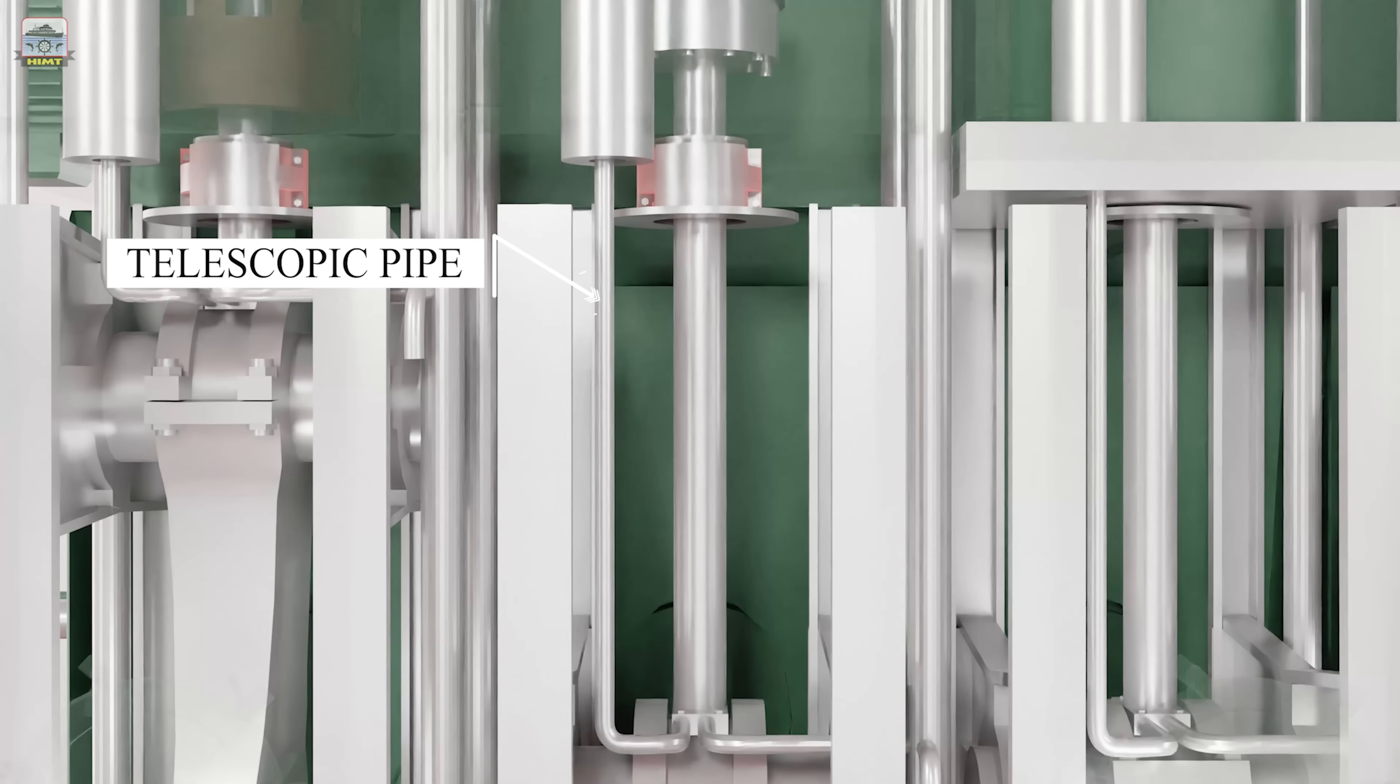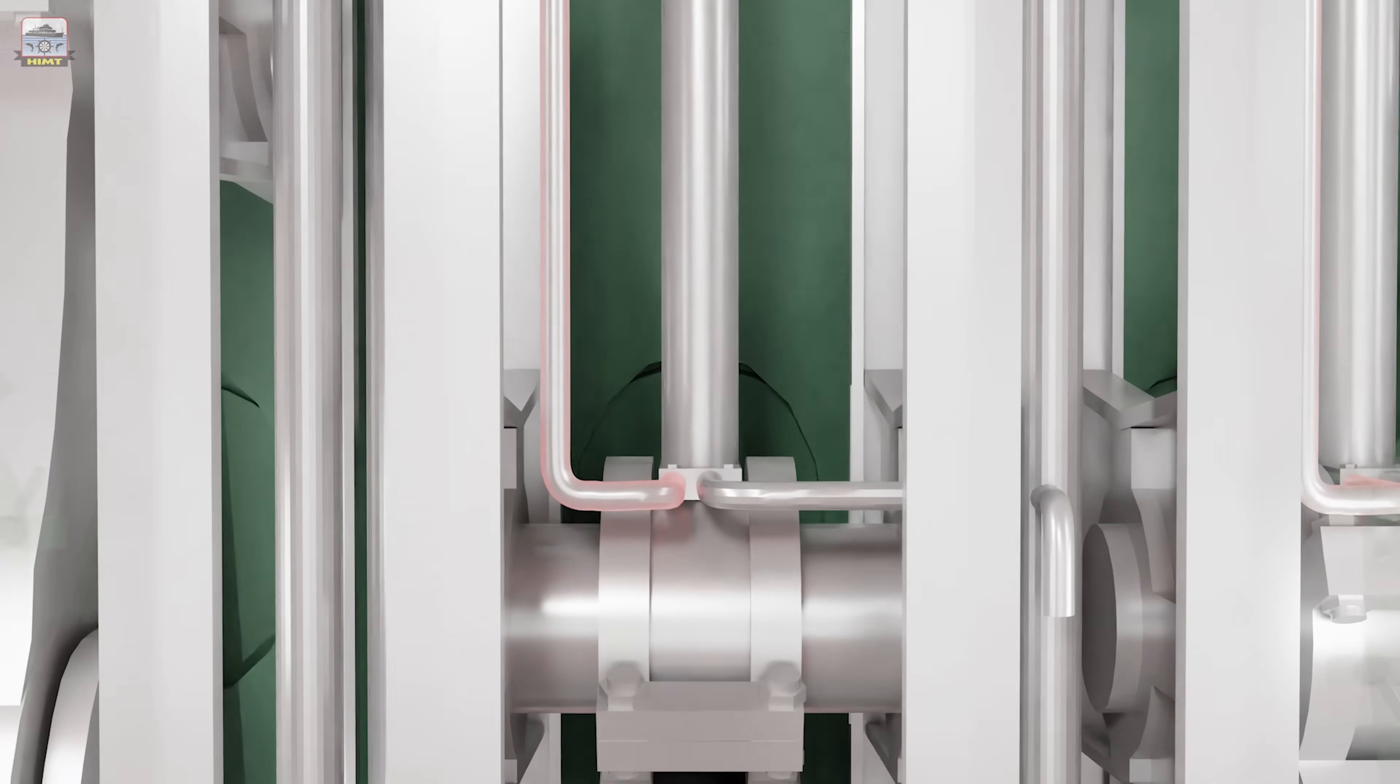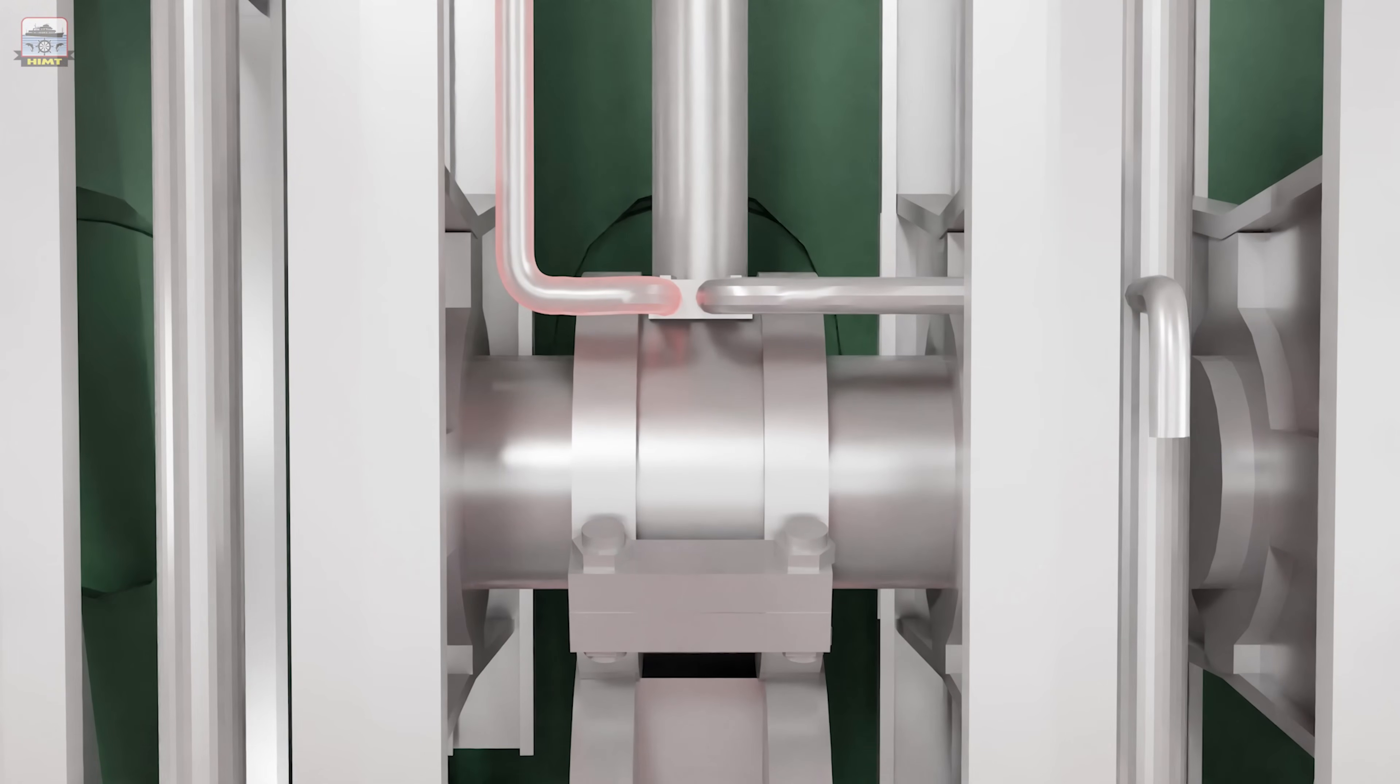For cooling of the piston, a telescopic pipe fitted to the cross-head supplies oil. The heated oil from the piston is discharged to the crankcase by another pipe from the cross-head. The piston rod is provided with a passage at the center and a concentric passage surrounding the center passage for the supply and return of piston cooling oil.